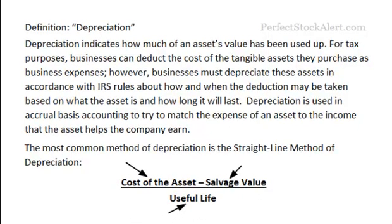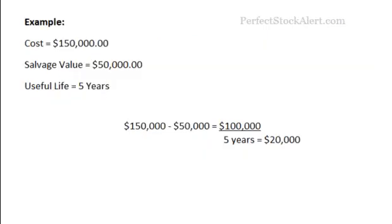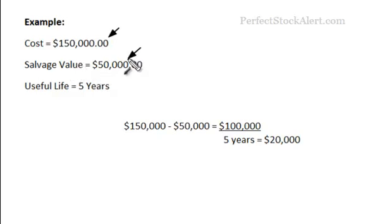Let's look at an example. Let's say company XYZ buys an asset — it's got to be a tangible asset in order to be talking about depreciation; if it's intangible, we'll be talking about something else. The cost of that asset was $150,000, and let's say that piece of equipment had a salvage value of $50,000 after it was all used up — they could probably sell it and make $50,000 on it. The useful life of this piece of equipment they expect to be about five years.